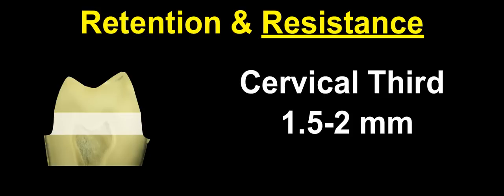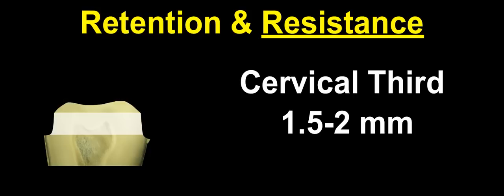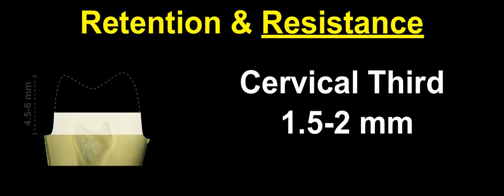What happens if we have less tooth structure on top of that? As the crown diminishes, we will have problems with retention — but our preparation, even when the crown diminishes, will have resistance form even if we only have 1.5 to 2 mm at the cervical end. This would correspond to a preparation that was 4.5 to 6 mm in height, and it would be easy for us to make our crown reconstruction with a simple resin composite or bonded restoration with no problem.